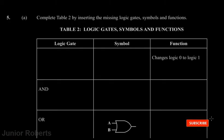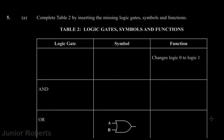Junior Roberts here again with realjuniorroberts.com. We're on to question five of the CSEC Physics January 2020 past paper. I've done questions one, two, three, and four in a previous video — I will place a link to that entire playlist so you'll be able to check out all those videos. Let's get right into question five. It says: complete table two by inserting the missing logic gate symbols and functions.